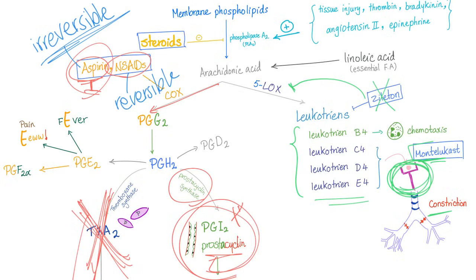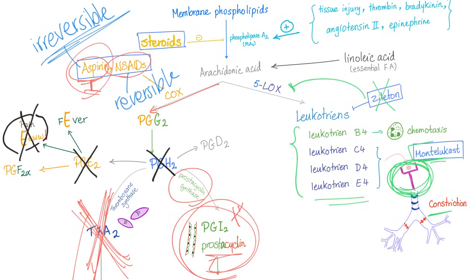Aspirin in low dose is antiplatelet — that's why grandpa takes baby aspirin. Aspirin is never for babies; it can cause Reye's syndrome. Baby aspirin simply means a small dose. In high dose, aspirin is analgesic, anti-inflammatory, and antipyretic. Aspirin is just genius — by blocking cyclooxygenase. And the most famous side effect of aspirin? Bleeding.